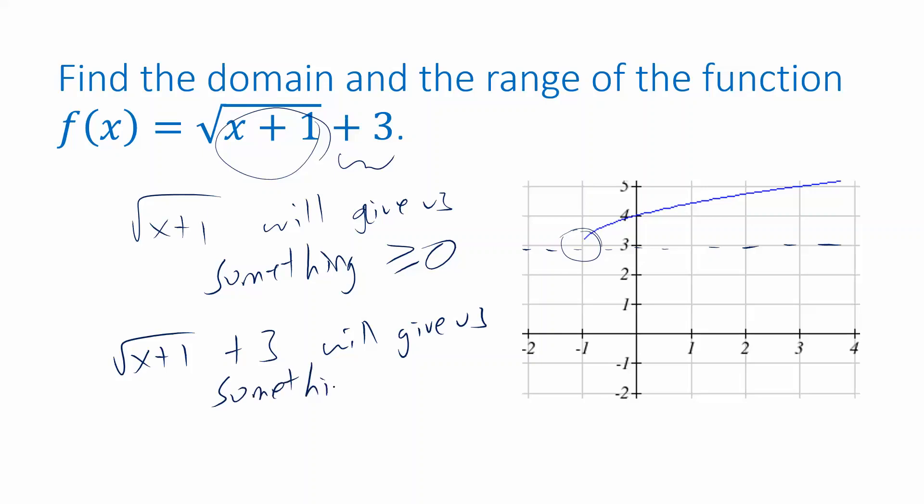And then once we do that, we're going to add 3. So square root of x plus 1 and then add 3 will give us something greater than or equal to 3. Could we get a 3 out of this? Sure. If I plug in x equals negative 1, notice that negative 1 plus 1 is going to be 0. When I take the square root of 0, I get 0. And then when I add 3 to that, I get 3. f of negative 1 is equal to 3. So I am able to actually get a 3 out, even though the graph doesn't really make that clear.